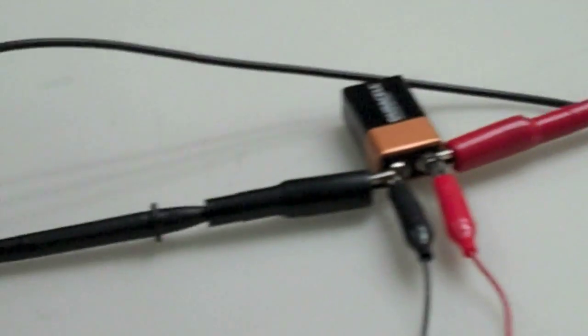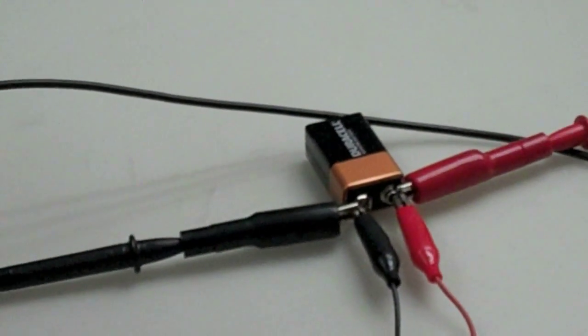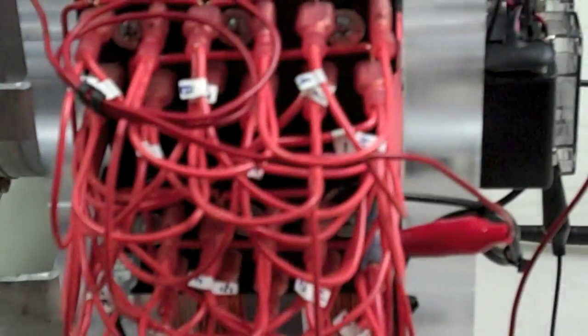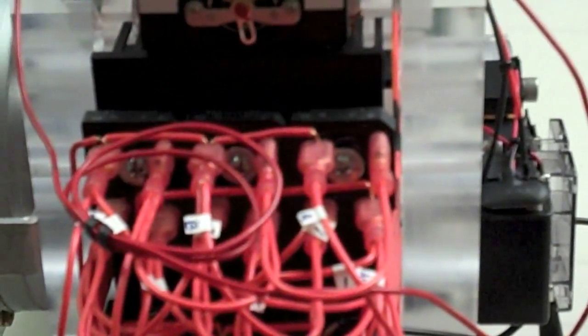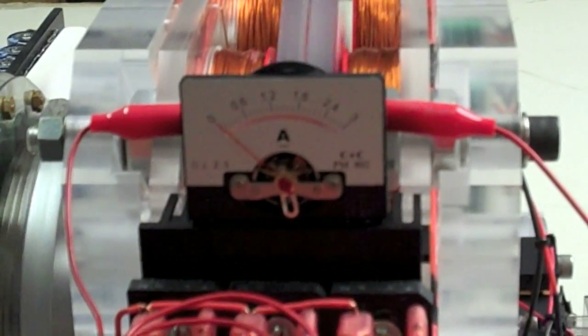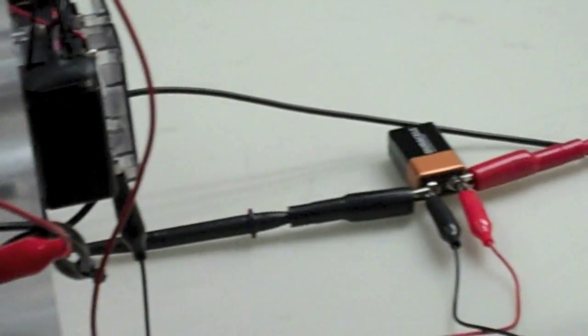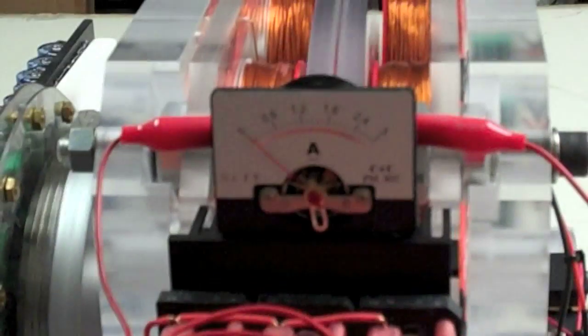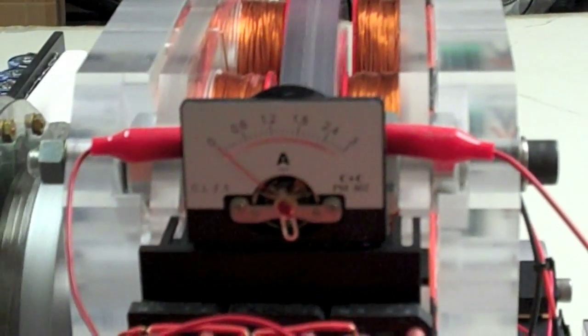But you say well what about the amperage, what are we doing with that? Let me just connect the camera here to the tripod. I'm pretty jumpy here. Okay, here's the amperage draw from the 9 volt battery.